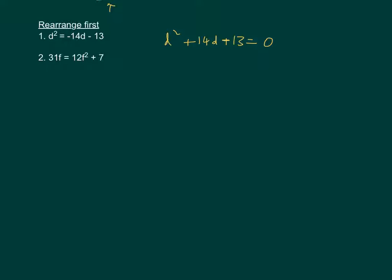And it looks like we've got factors of 13 and 1. So we've got d plus 13 and d plus 1 equals 0. And then solving it, we've got d equals minus 13, or d equals minus 1.